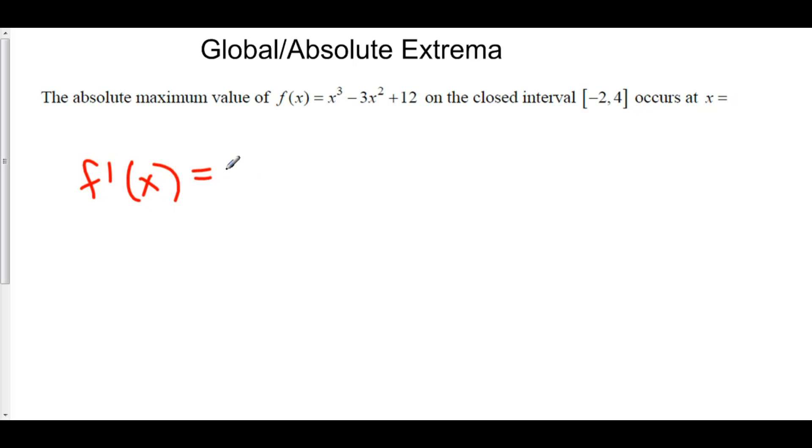So the derivative is 3x² - 6x. This always exists, so let's set it equal to 0. We can factor out a 3x, leaving x - 2, and this is equal to 0. So we have critical points at x = 0 and at x = 2.